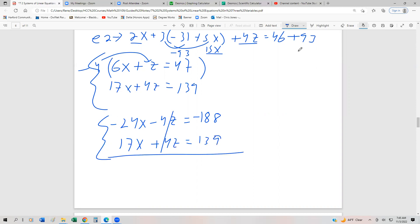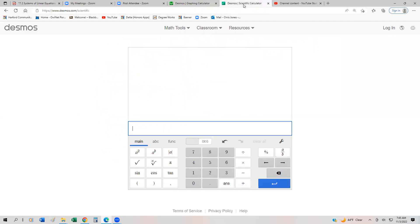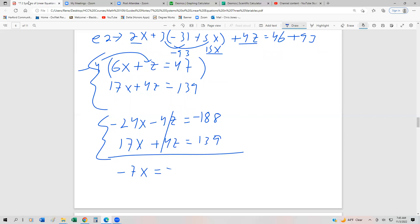And now what we can do is we can add. The z's cancel out. This becomes negative 7x. And then I'm hoping this becomes something like 42 or 49 or something. So let's go ahead in our calculator. 139 minus 188 is negative 49. I always get a little scared sometimes when I'm doing these because I don't know if the numbers are going to work out nice or not. But in this case, we do get x equals 7.